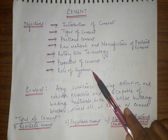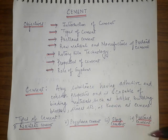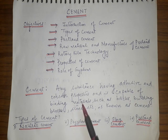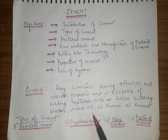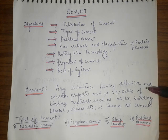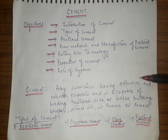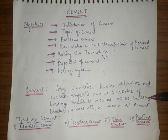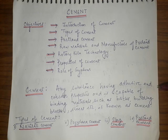As the definition states, any substance having adhesive and cohesive properties that is capable of binding materials such as bricks, building blocks, stone, etc. is known as cement. So cement is a substance which must possess adhesion and cohesion properties so that it can bind building materials together.